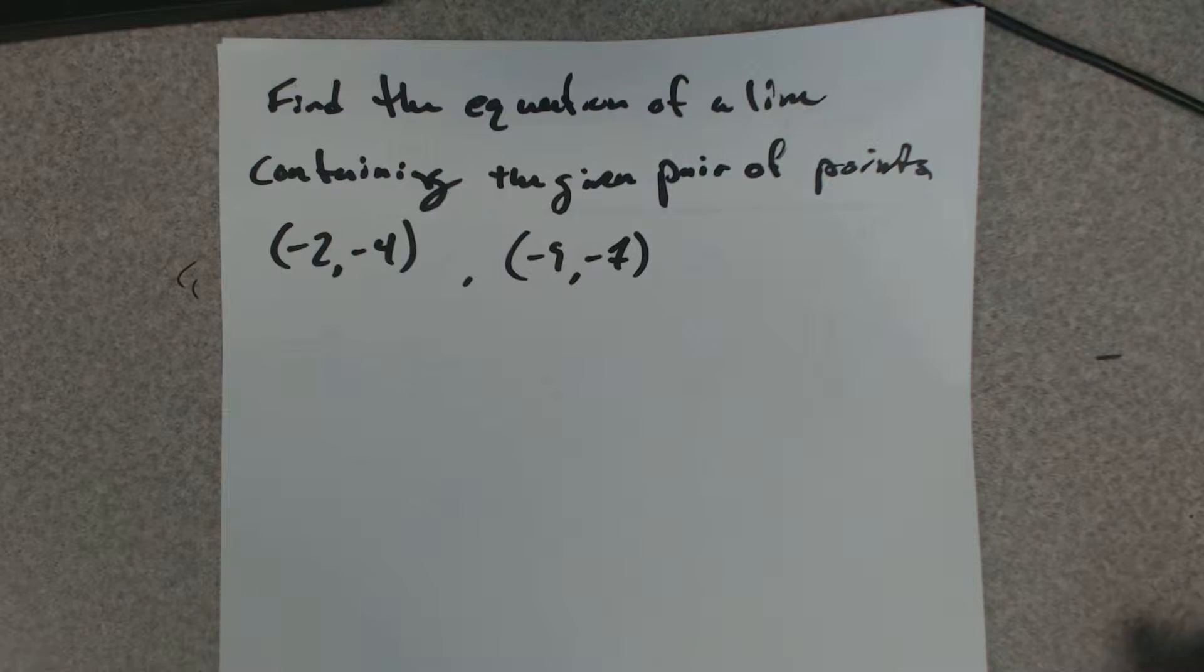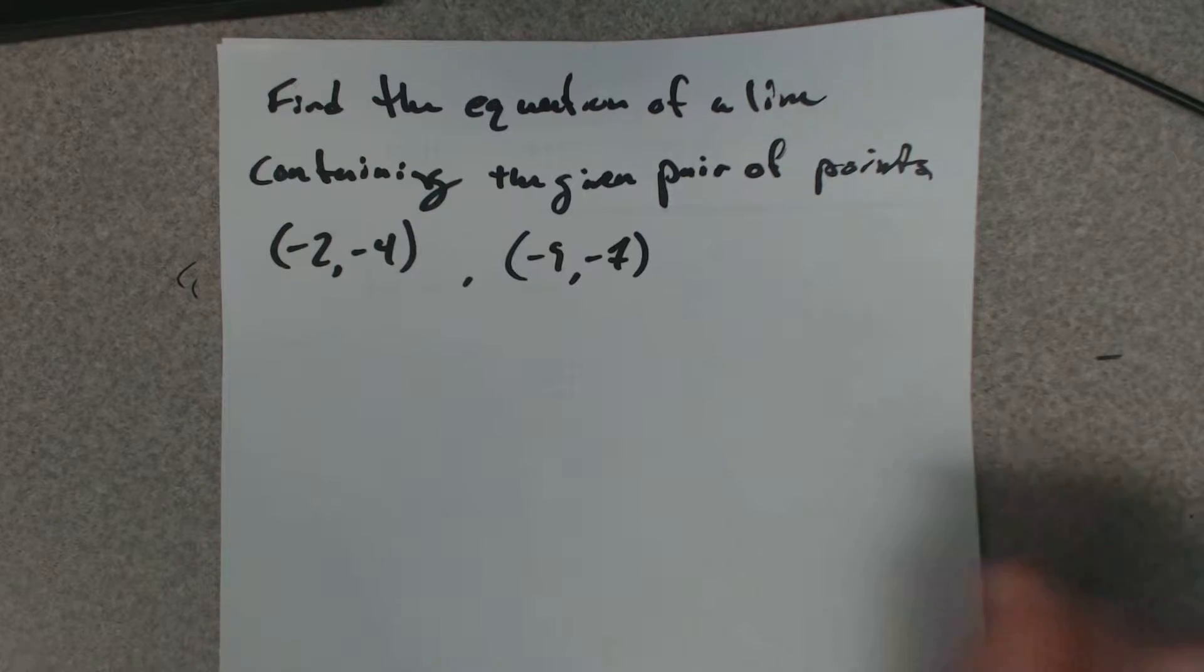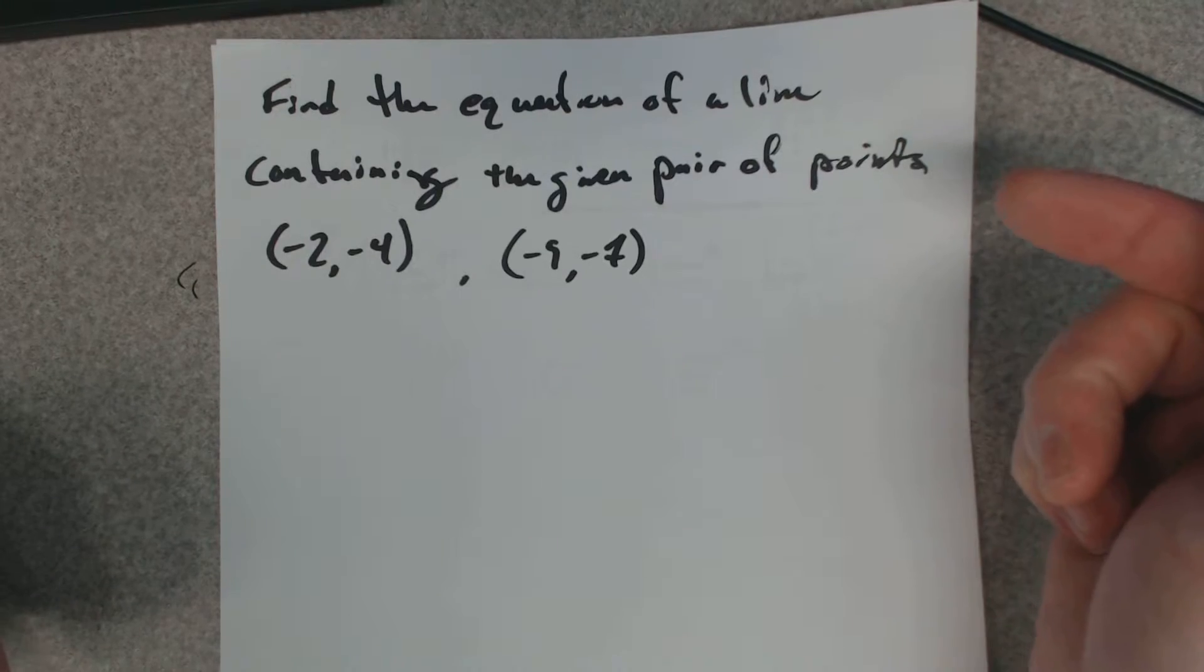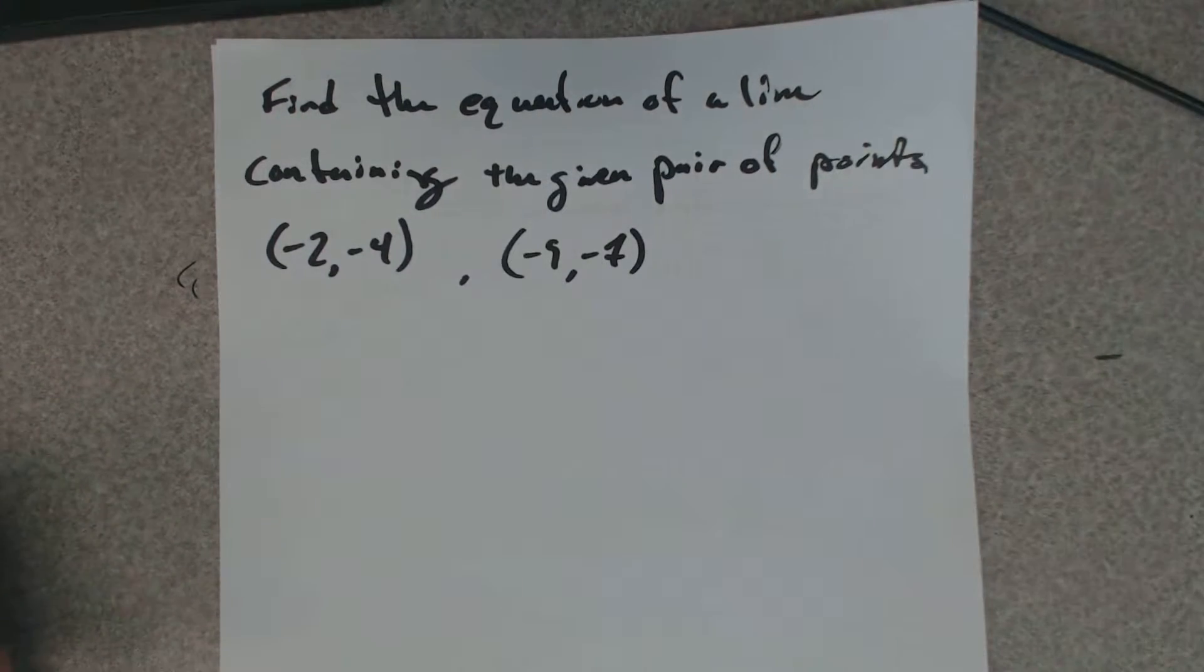Here we're challenged to find the equation of a line containing the given pair of points. Two points are on a line and we have to find the equation that makes up that line.